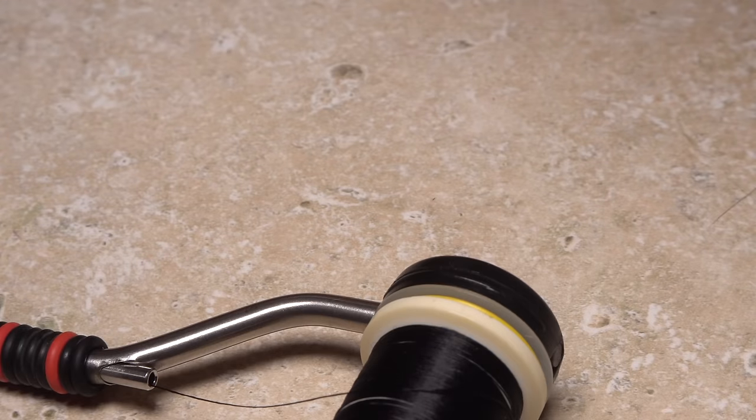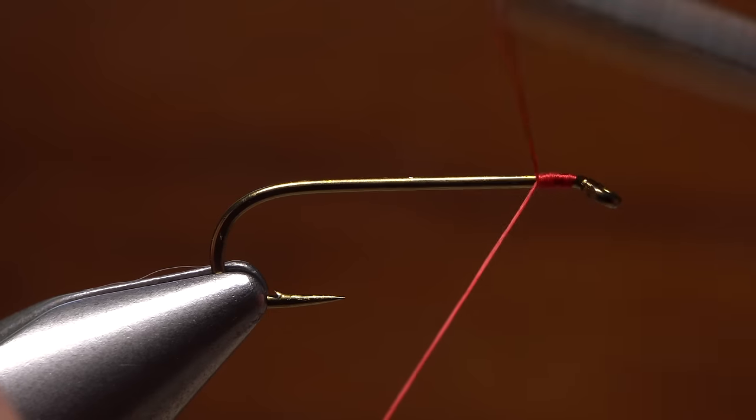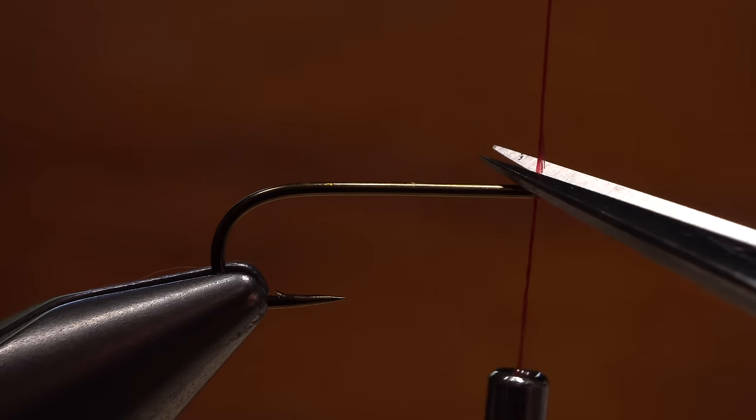Begin by picking up the bobbin with the red thread and getting that thread started on the hook shank behind the eye. After taking a few wraps rearward, snip off the excess tag.